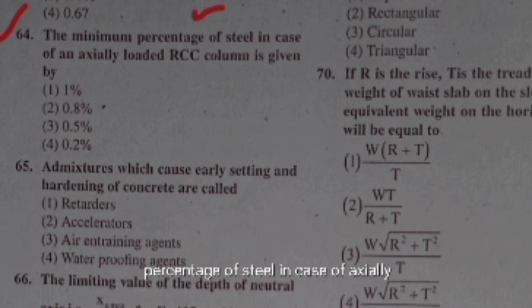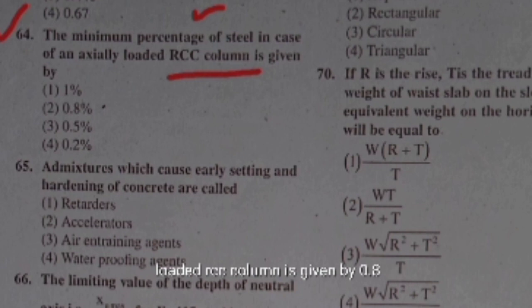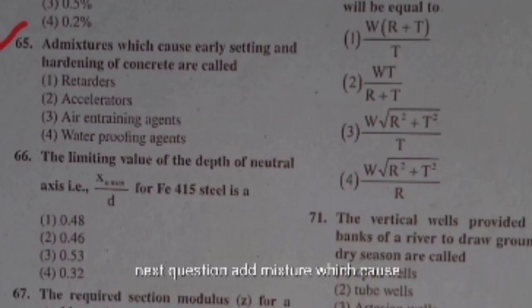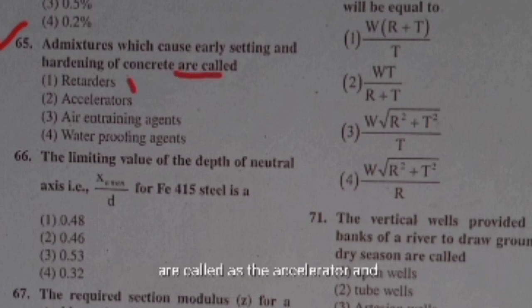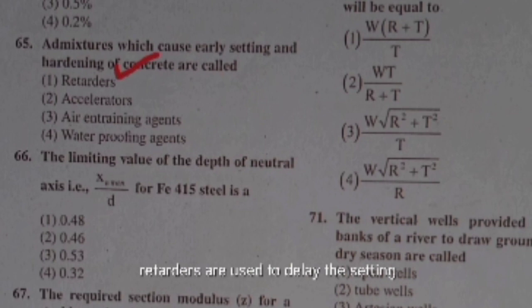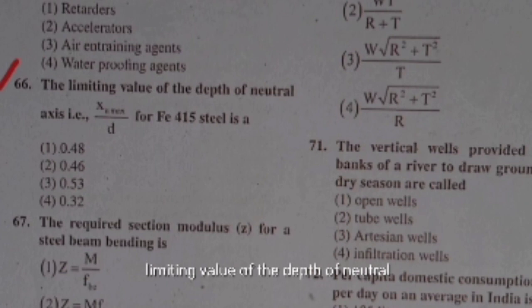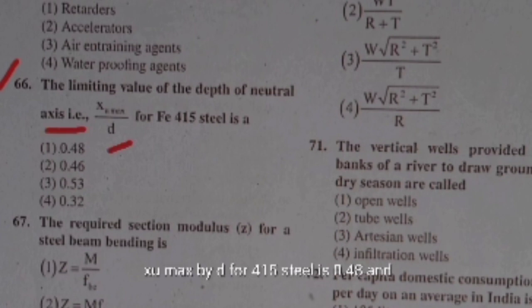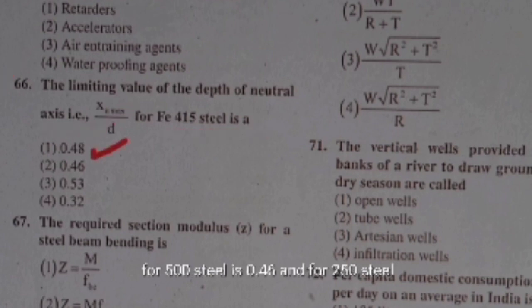The minimum percentage of steel in an axially loaded RCC column is 0.8%. Admixtures which cause early setting and hardening of concrete are called accelerators; retarders are used to delay the setting time of cement. The limiting value of the depth of neutral axis (xu,max/d): for Fe 415 steel is 0.48, for Fe 500 steel is 0.46, and for Fe 250 steel is 0.53.